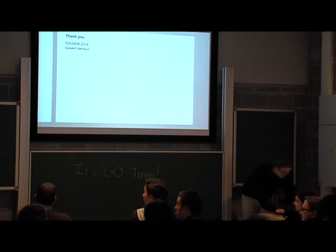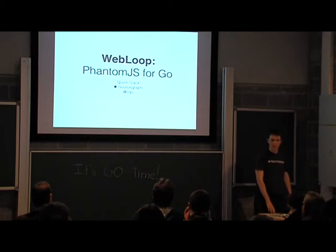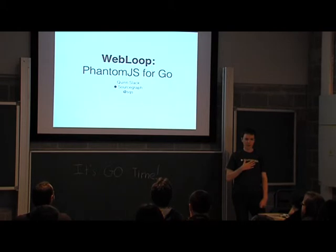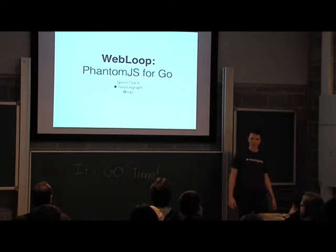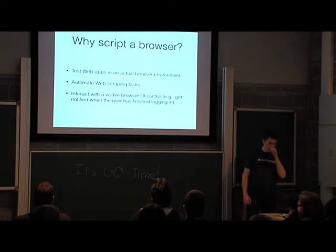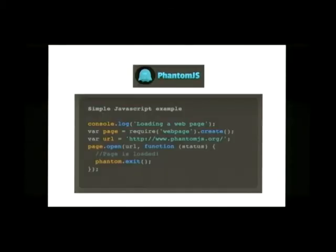Now where's Quinn? All right, please welcome Quinn. My name is Quinn and I'm at Sourcegraph. I want to talk about a library I made that helps you script web browsers — it's called WebLoop. It's kind of like Phantom.js. How many of you have heard of Phantom.js? It's like Phantom.js but for Go, so it's much better. It's good for testing complex apps, scraping the web, and for applications where the user has a web view you want to interact with.